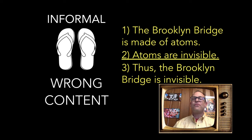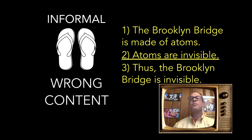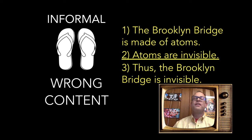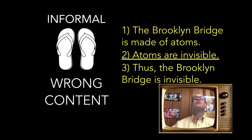That's different from an informal fallacy. Consider the fallacy of composition or division: Premise one — the Brooklyn Bridge is made of atoms. Premise two — atoms are invisible. Conclusion — thus the Brooklyn Bridge is invisible. One is correct, two is correct, but three does not follow. Just because the members of a group have a property doesn't mean that when you take the group as a whole it will have that property.